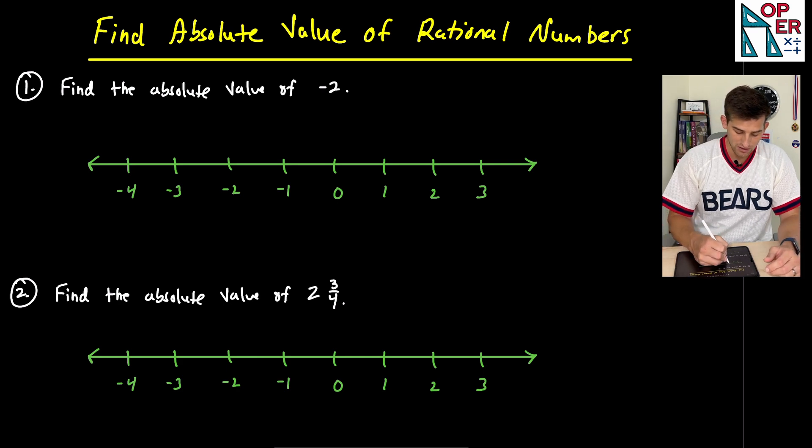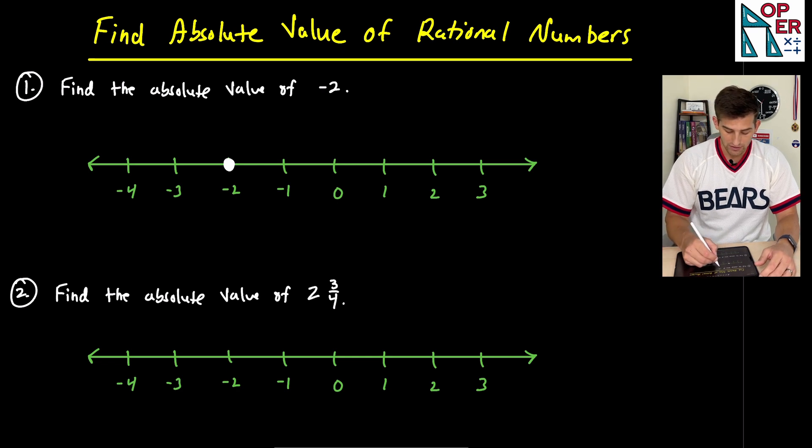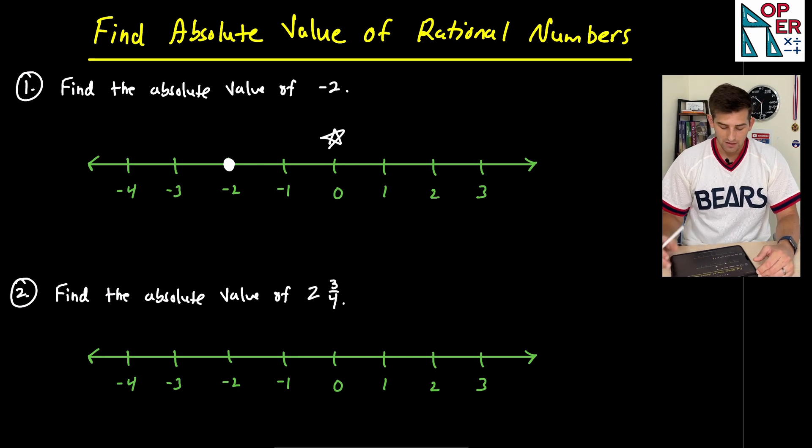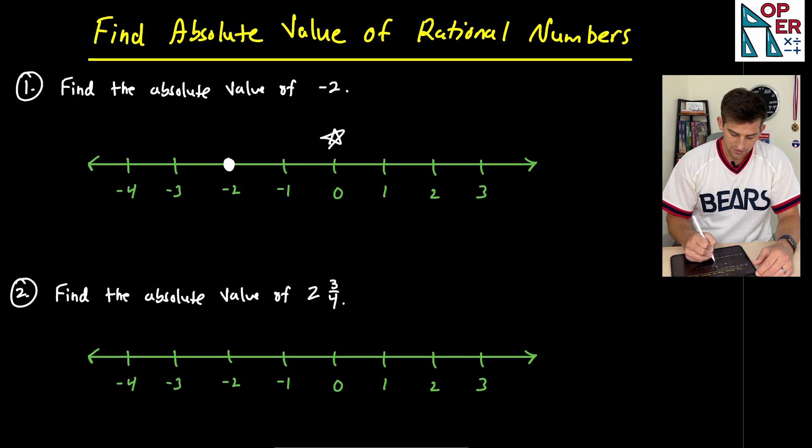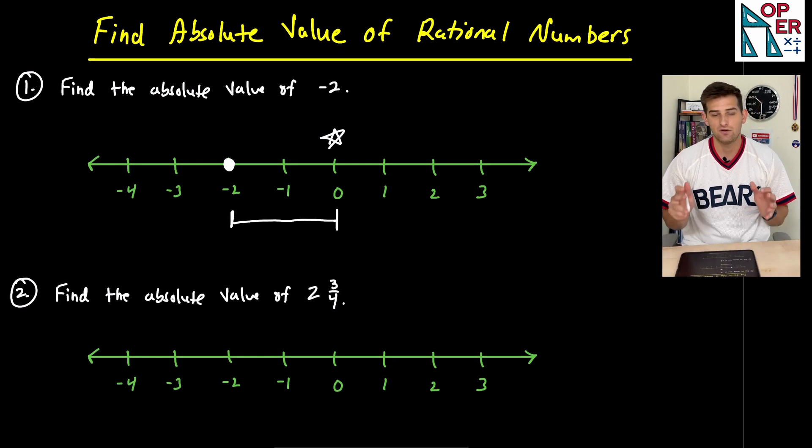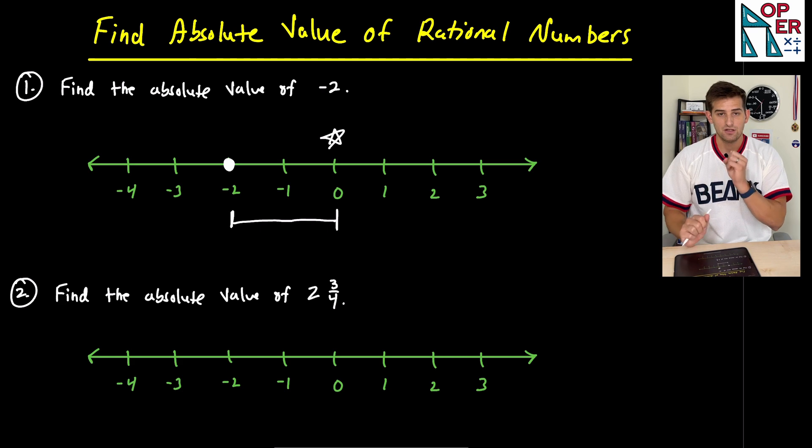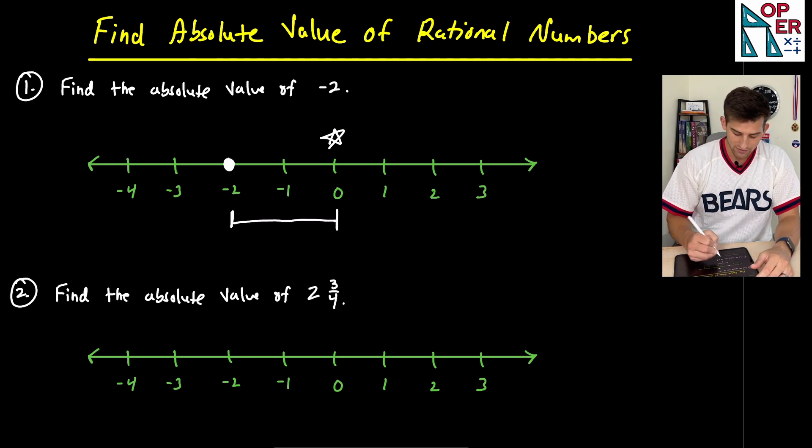So the first thing I want to do is just plot a point on my number line at negative two. Now, I want to know where zero is. So there's zero. And now I look, here's zero, here's negative two. What is my distance here? How far, how many units away is negative two from zero? Well, we start at zero, we go to negative one, and then we get to negative two.